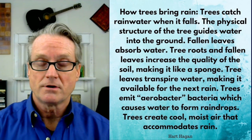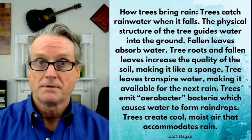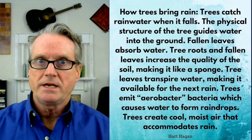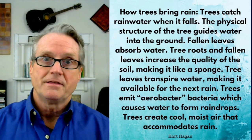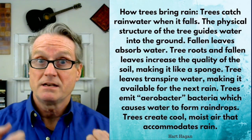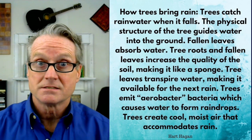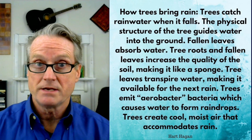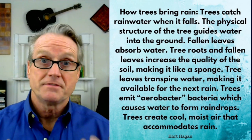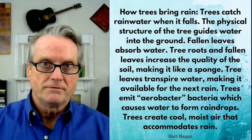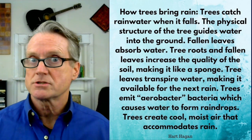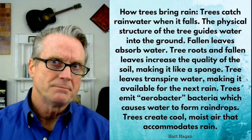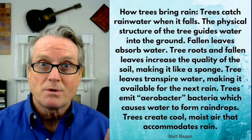Two inches of rainfall is 54,000 gallons per acre. So if the leaf litter of a tree absorbs two inches of rain — 54,000 gallons — that's water that's not going to rush off and run into the streams. It's that much water that is then available either to evaporate back into the air, which is good for the water cycle.